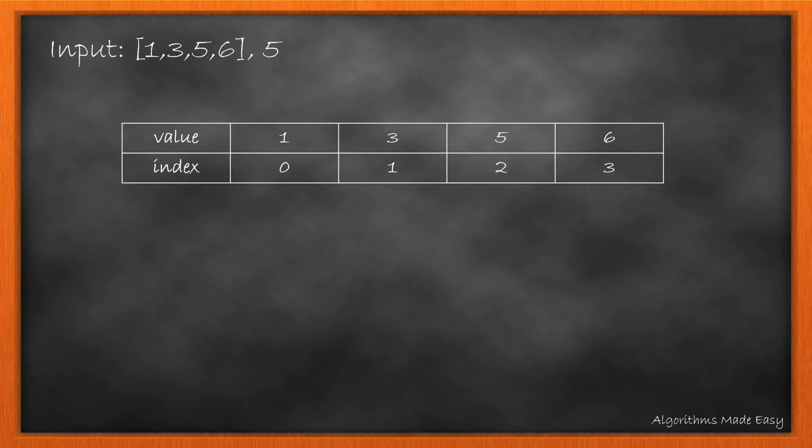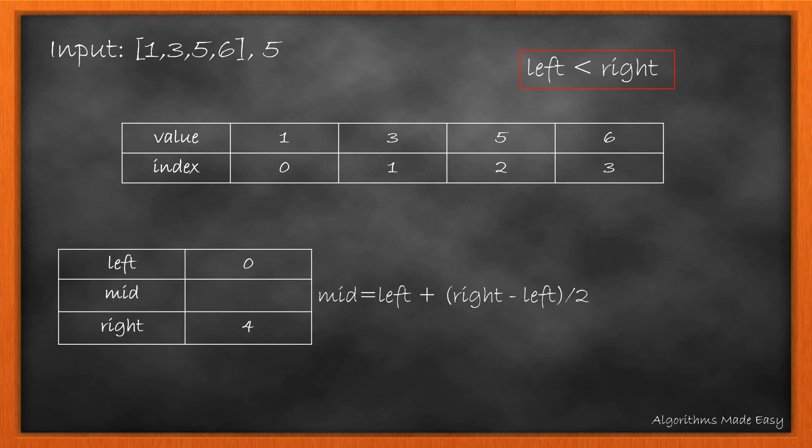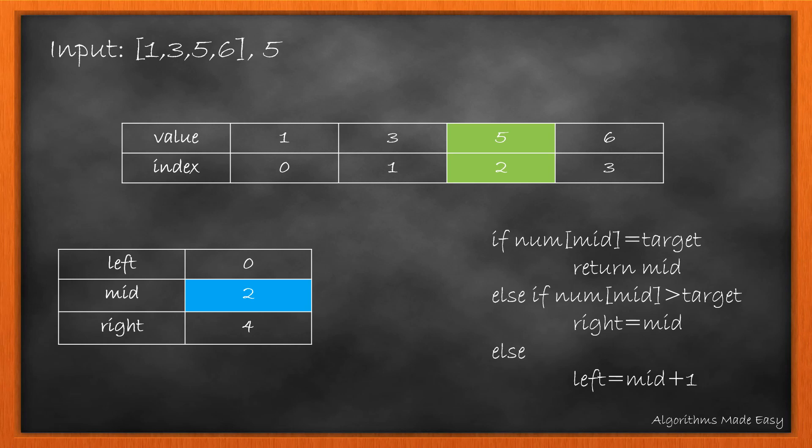Taking an example where target value exists in the array. We will initialize left and right value with 0 and length of array. We will then find mid of the array which comes out to be 2 in this case. Now we compare the value at mid index with the target. As the value is equal, we simply return the mid index 2.